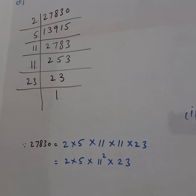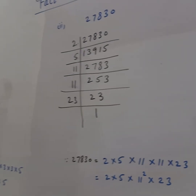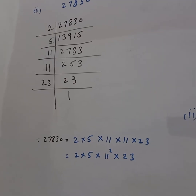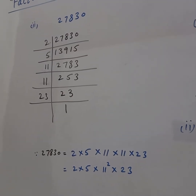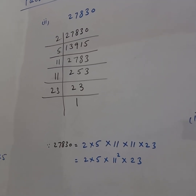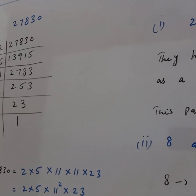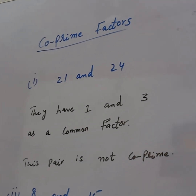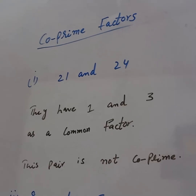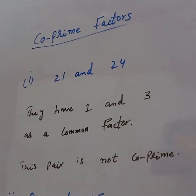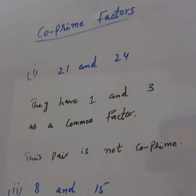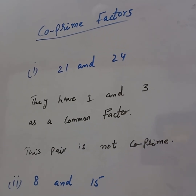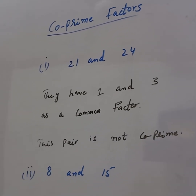These are the factors of the given number. Now we will see co-prime factors. How to find co-prime factors? Given numbers are 21 and 24. They have 1 and 3 as common factors, so this pair is not co-prime.